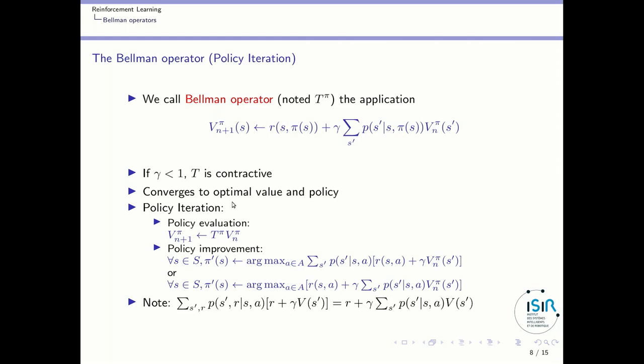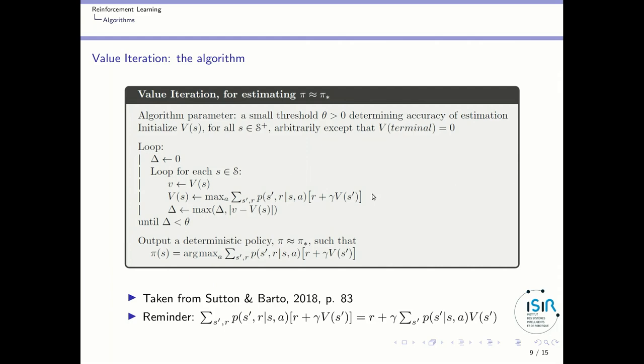Policy iteration is more complicated than value iteration — it's in two steps. You have one step of policy evaluation where you apply the Bellman operator corresponding to the current policy to compute the value of the current policy. And then you improve the policy just by taking the better action given the current value function. You have two different formulas here because of some mathematical identity. So you compute the value of a policy, then improve your policy, compute the value again, improve your policy, etc. This is shown to converge to the optimal value and policy.